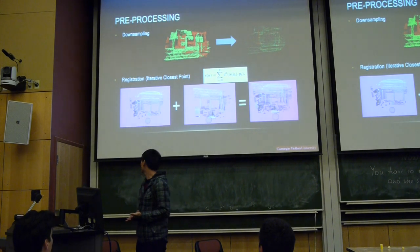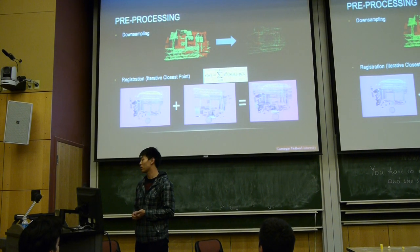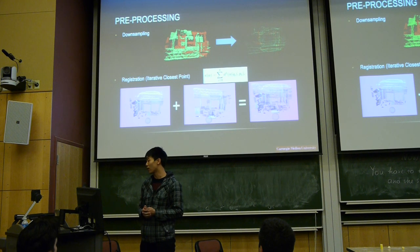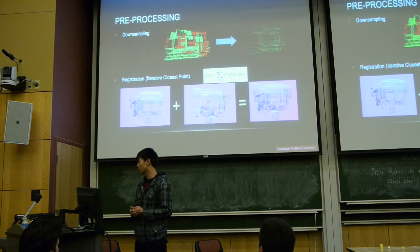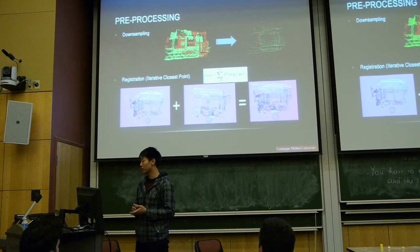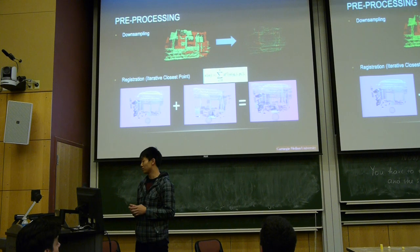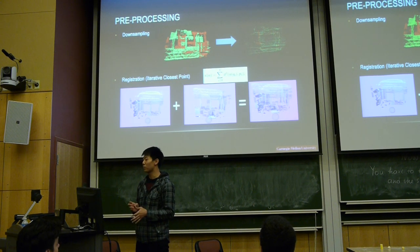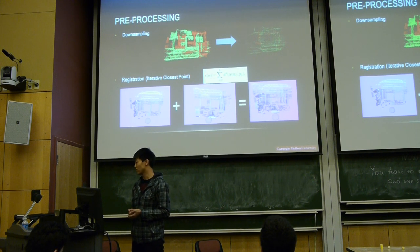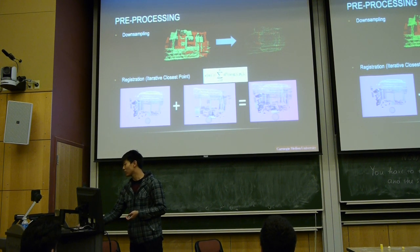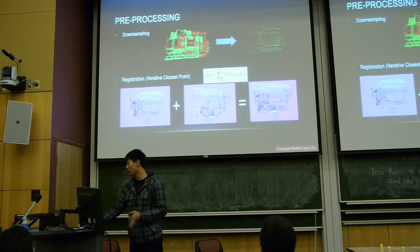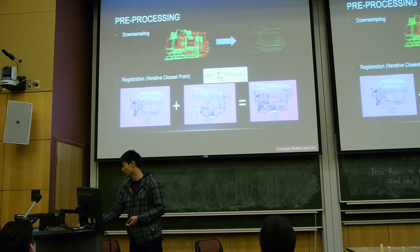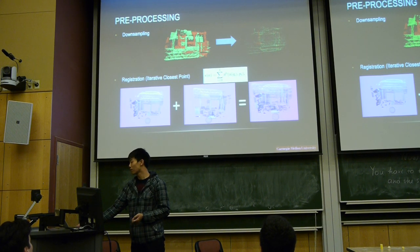This is down sampling. Since the resolution of Kinect is 640 by 480, I will collect data and then do the down sampling to randomly choose 10 pixel by 10 pixel. Choose each 10 pixel by 10 pixel as a cell and choose maximum one point in this cell. And after the down sampling, it results in 1,000 or 2,000 points in the single image.